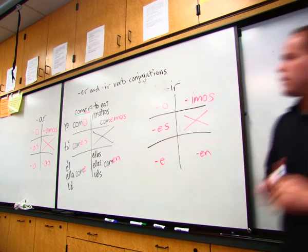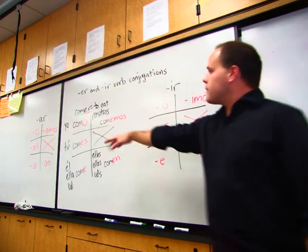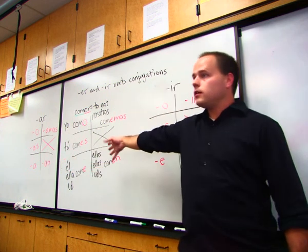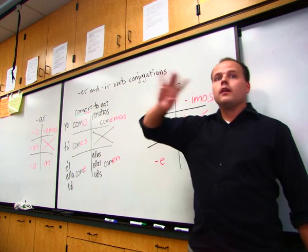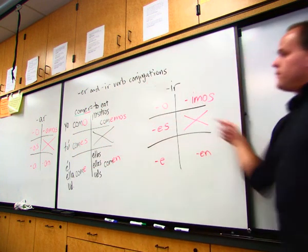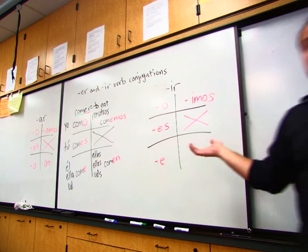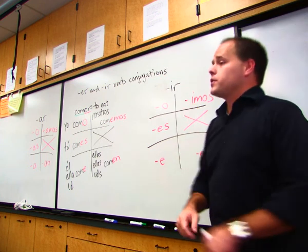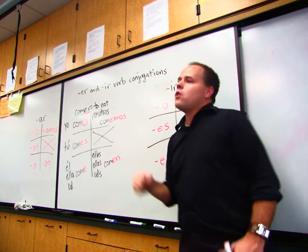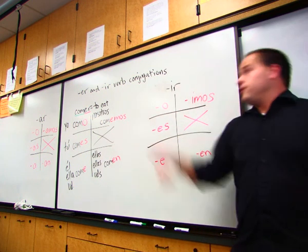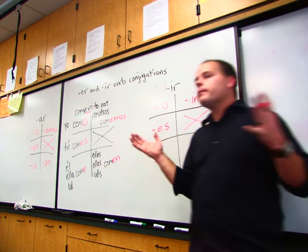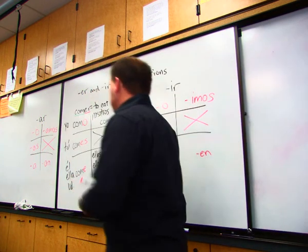Take a look real quick at the ER and AR verbs. What do you notice about these sets right here? Are they similar? Except for what? Instead of an A, you're putting an E in all these. Now what's the similarities and differences between these two? They're exactly the same except for nosotros. So right there you've got some connections. If you know the AR verbs, change A to an E, you know the ER verbs. If you know the ER verbs, change the nosotros to IMOS and you know the IR verbs. They're all pretty much very similar with the differences.